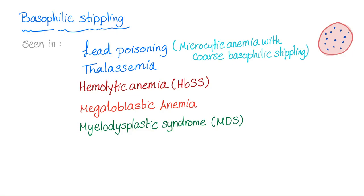Lead poisoning presents as microcytic anemia, and with coarse basophilic stippling you will find this on the blood film or peripheral smear. What else? We have thalassemia, hemolytic anemia such as sickle cell anemia — and thalassemia can also lead to hemolytic anemia. Megaloblastic anemia, such as B12 deficiency, folate deficiency, etc. Also myelodysplastic syndrome, or MDS.